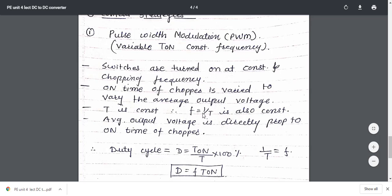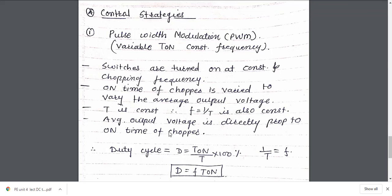The average output voltage is directly proportional to the on time of the chopper. The duty cycle D is defined as the ratio of on time to the total time period: D = T_on / T, where T = T_on + T_off, expressed as a percentage D = (T_on / T) × 100%. Since 1/T equals frequency f, this can also be written as D = f × T_on.